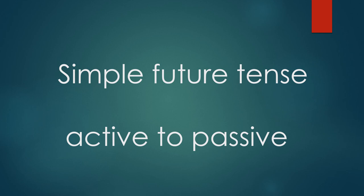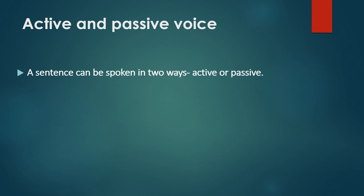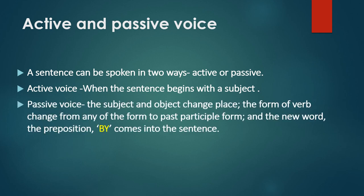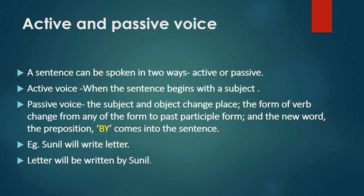Simple Past Tense Active to Passive. A sentence can be spoken in two ways: active or passive. Active voice: when the sentence begins with a subject. Passive voice: the subject and object change place. The form of the verb changes to past participle form, and the preposition 'by' comes into the sentence. Example: 'Sunil will write letter' — Sunil khat likega. Passive: 'Letter will be written by Sunil' — Khat Sunil ke dwara likha jayega.